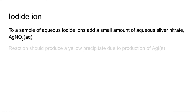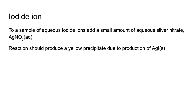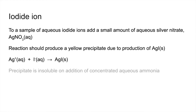Finally, the iodide ion — same procedure. We get a yellow precipitate from the production of insoluble AgI, silver iodide. The precipitate is insoluble on addition of concentrated aqueous ammonia, and will obviously not dissolve in dilute ammonia either.